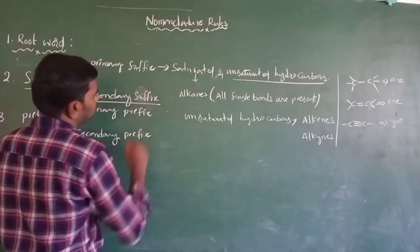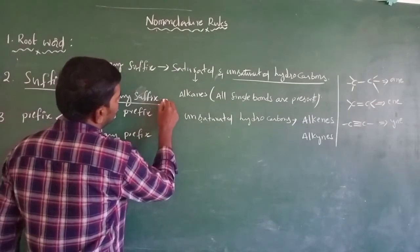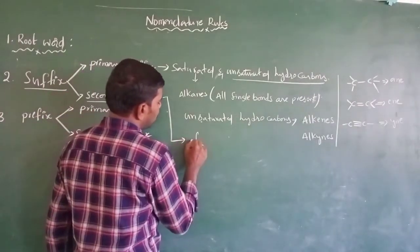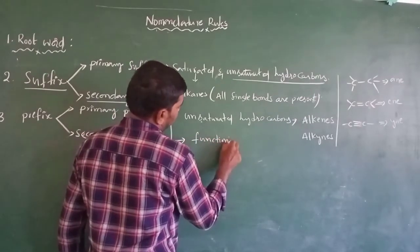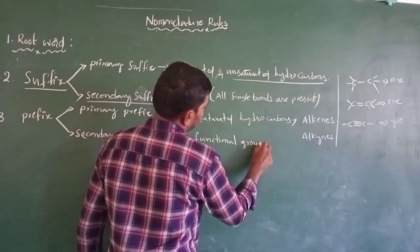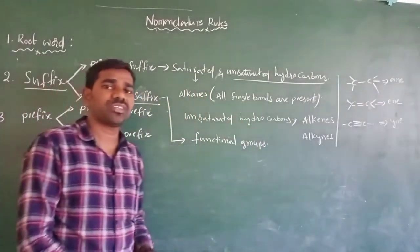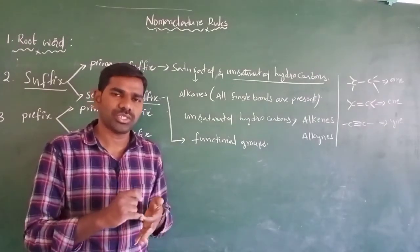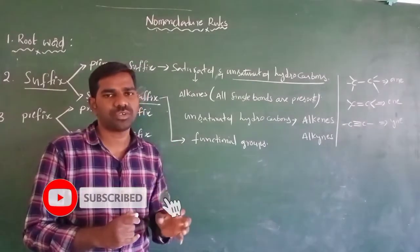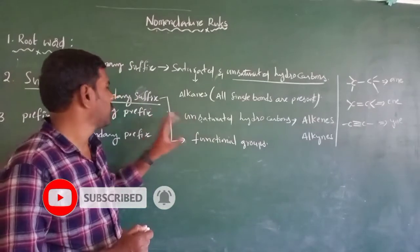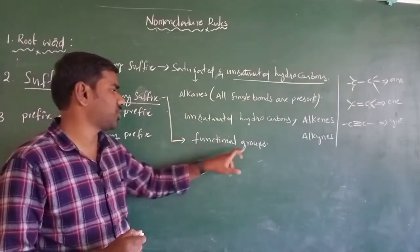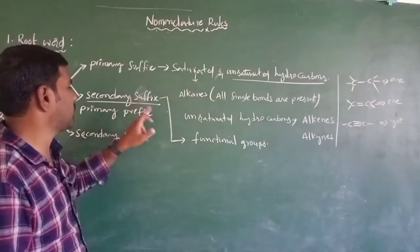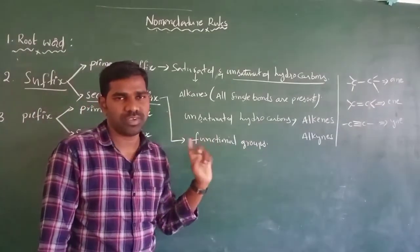Next, secondary suffix. Secondary suffix indicates the general functional groups. So secondary suffix is used to indicate functional groups such as OH, CHO, COOH, C=O, H2. So even functional groups are used — that means secondary suffix indicates functional groups.